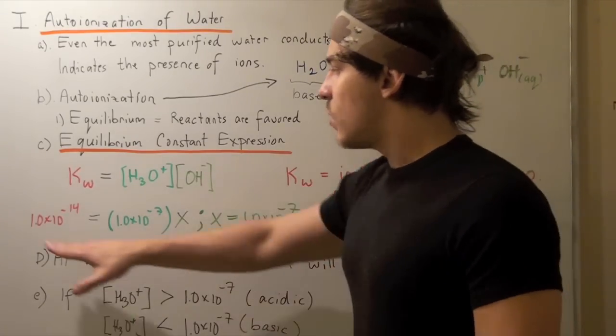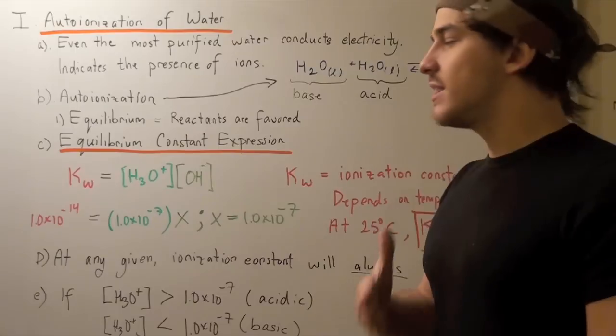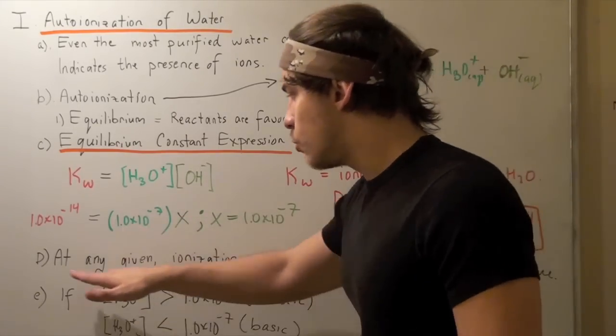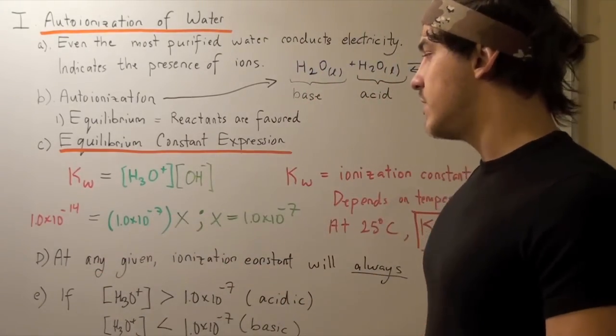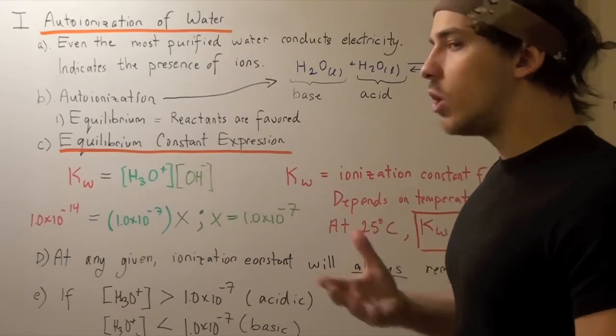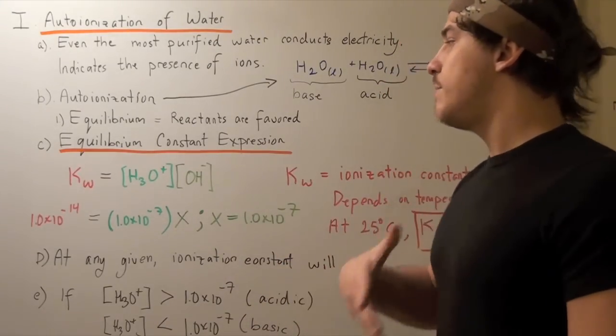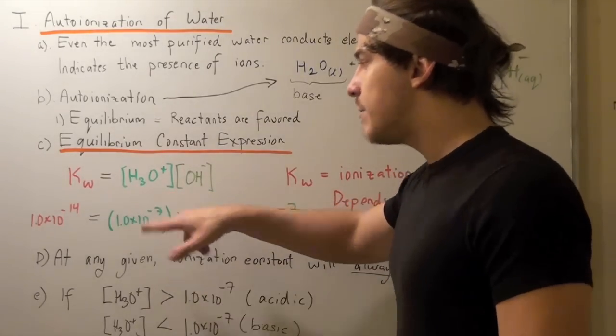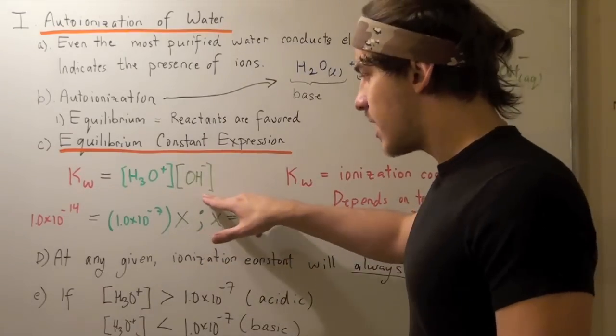Since we know this and Kw, we can find the concentration of hydroxide by simply dividing through by 1.0 times 10 to negative 7. We get x equals 1.0 times 10 to negative 7. So at a pH of 7, our concentration of hydronium equals that of hydroxide.